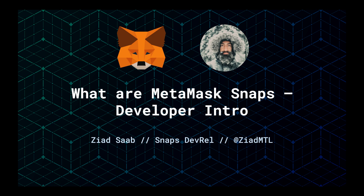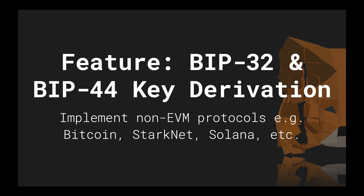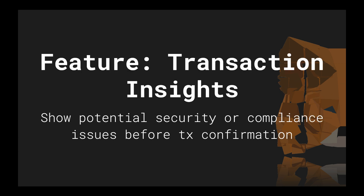By now, you should have a better understanding of what Snaps are and what they allow you to do as a developer. In this video, you learned about the various MetaMask Snaps APIs and what they let you do. The Key Derivation API allows you to implement non-EVM protocols in MetaMask. The Transaction Insights API allows you to show any information you want to your users about a transaction before they confirm it.